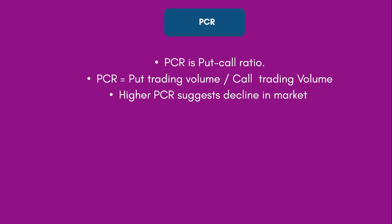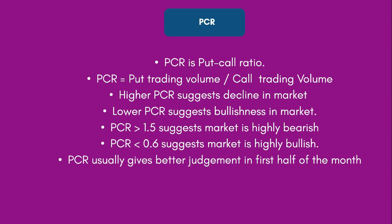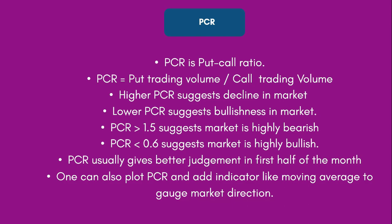Higher PCR suggests decline in the market and low PCR suggests bullishness. The standard levels are: if PCR is greater than 1.5, the market is highly bearish; if PCR is less than 0.6, it suggests the market is highly bullish. PCR also gives better judgment only in the first half of the month and not the second half. A lot of analysts also plot PCR on a graph and add indicators like moving average, MACD, and RSI on PCR to understand in which direction the market is heading.